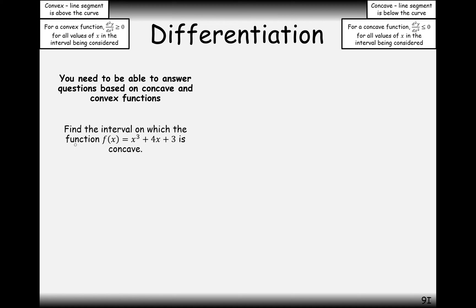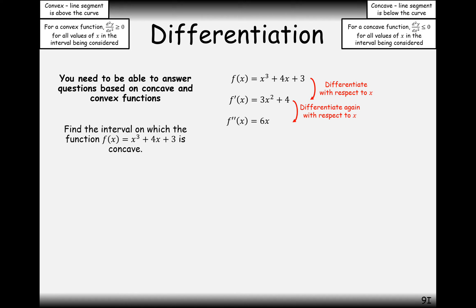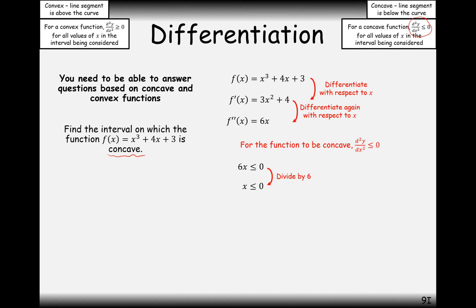Find the interval on which the function x³ + 4x + 3 is concave. First, differentiate it once and differentiate it twice to get 6x. We want concavity, so we're looking for when the second derivative is less than zero — when 6x is less than or equal to zero. Therefore x must be less than or equal to zero, and that's the region in which the graph is concave.